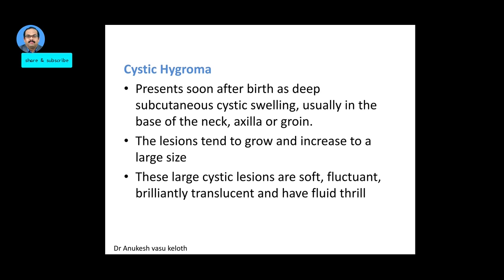Cystic hygroma presents soon after birth as a deep subcutaneous cystic swelling, usually in the base of the neck, axilla, or groin. The lesion grows and increases to a large size. These are large cystic lesions which are soft, fluctuant, and brilliantly translucent, with a fluid thrill. These are the characteristic features of a cystic hygroma.